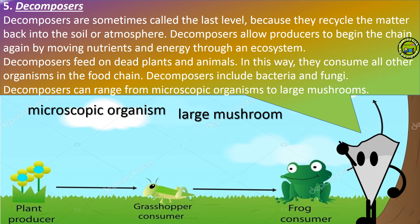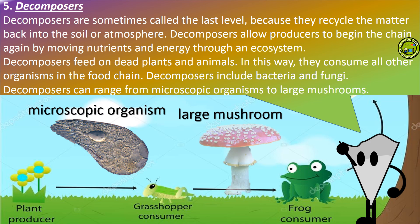Five, the decomposers. The decomposers are sometimes called the last level because they recycle the matter back into the soil or atmosphere. The decomposers allow producers to begin the chain again by moving nutrients and energy through an ecosystem. The decomposers feed on dead plants and animals, consuming all other organisms in the food chain. The decomposers include bacteria and fungi, and can range from microscopic organisms to large mushrooms.